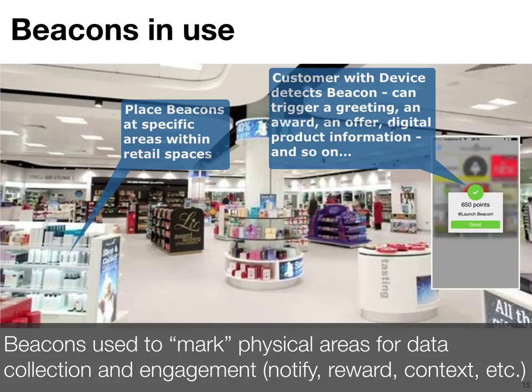Your classic example is in a shop. We could put some beacons at a certain point — say, near a shelf. An app running on my phone could detect such a beacon, figure out using the beacon's information that it represents the cosmetic area or a given brand within that area, and then take some action — for example, triggering an offer for the user.